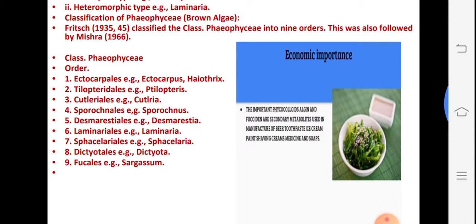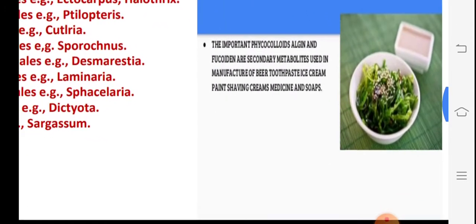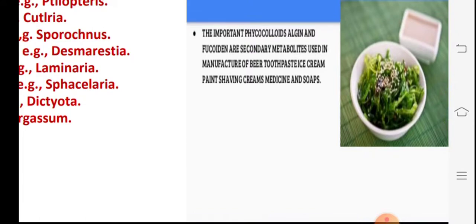Classification according to Fritsch in 1935 divides Pheophyta into nine orders based on genera: Ectocarpales, Tilopteridales, Cutleriales, Sporochnales, Desmarestiales, Laminariales, Sargassales, Dictyotales, and Fucales — Sargassum belongs to order Fucales because Fucus is the main genus.